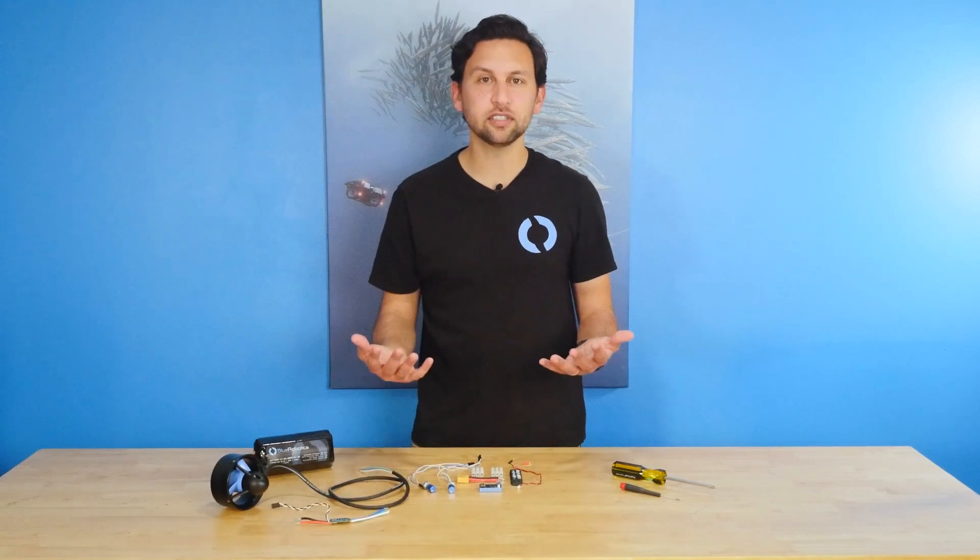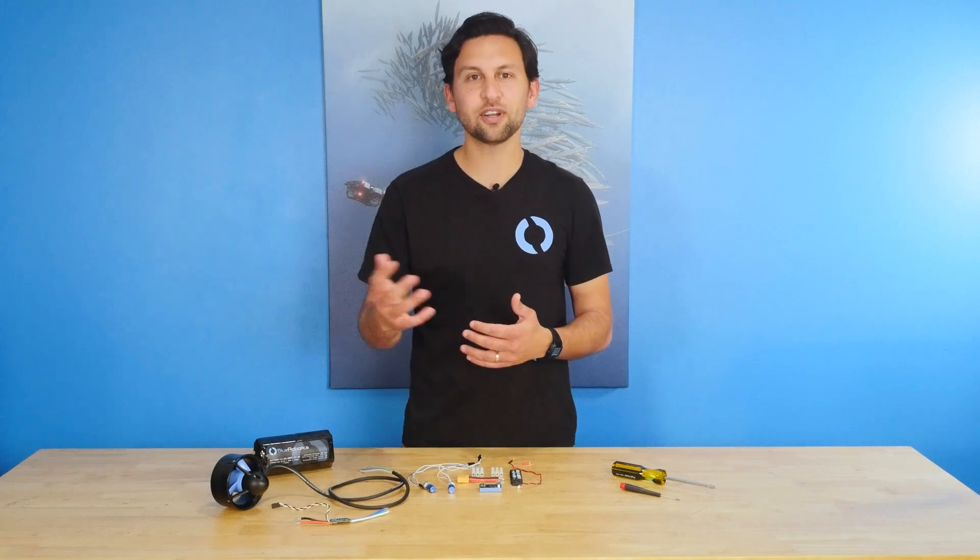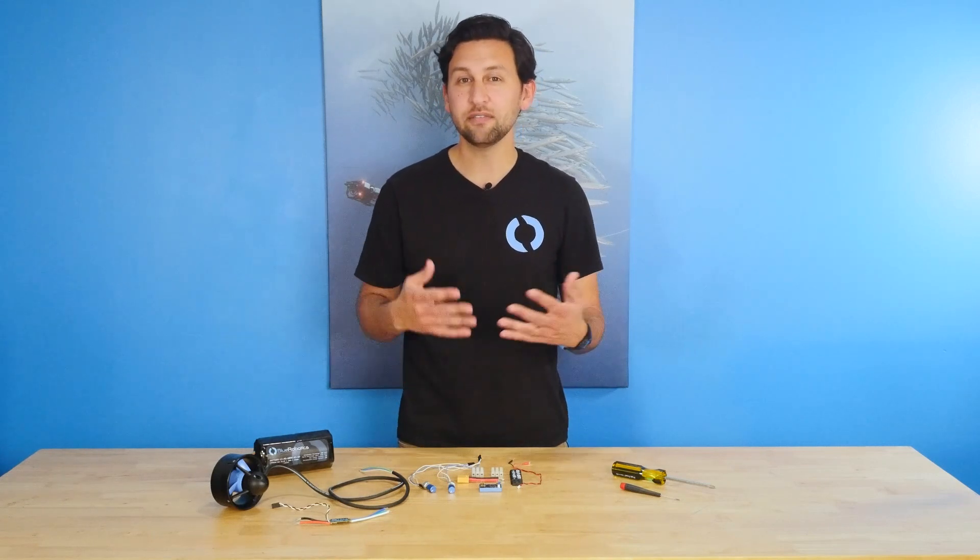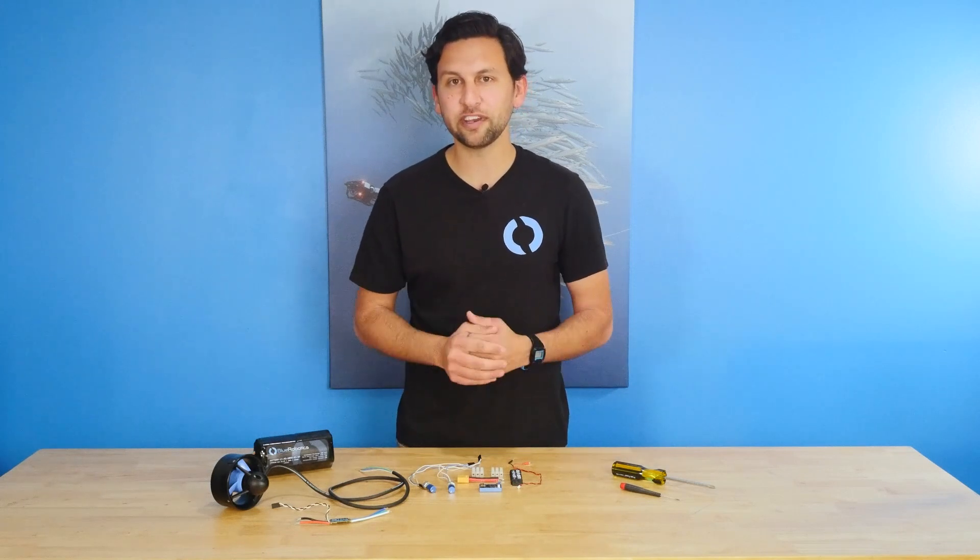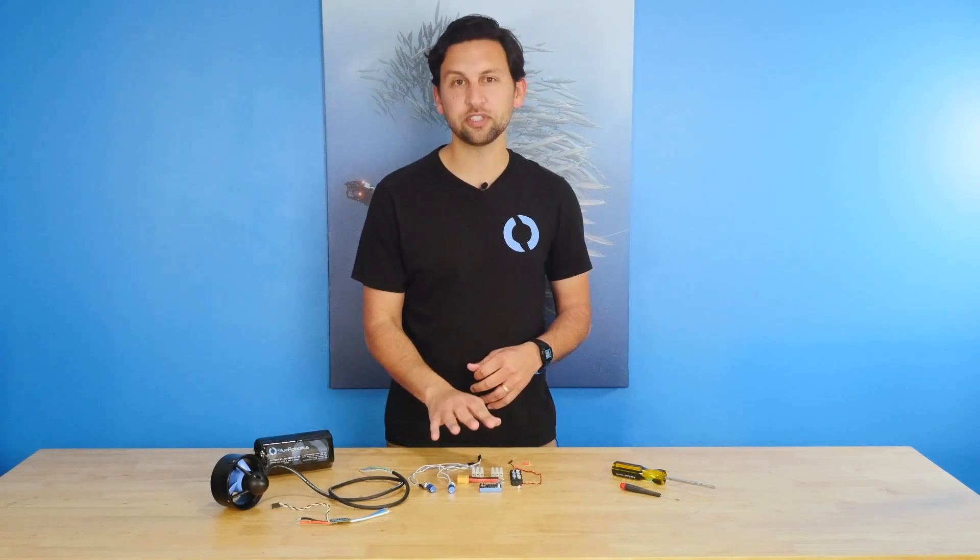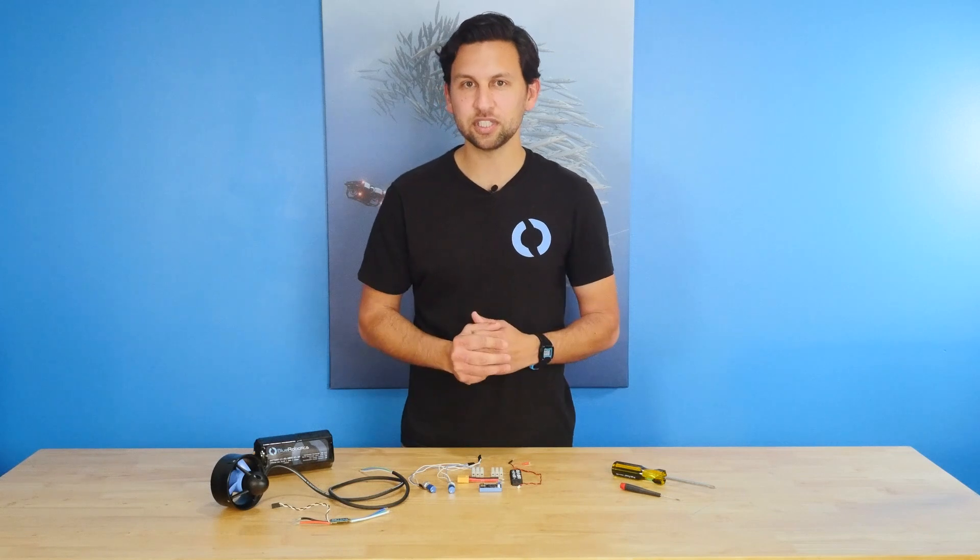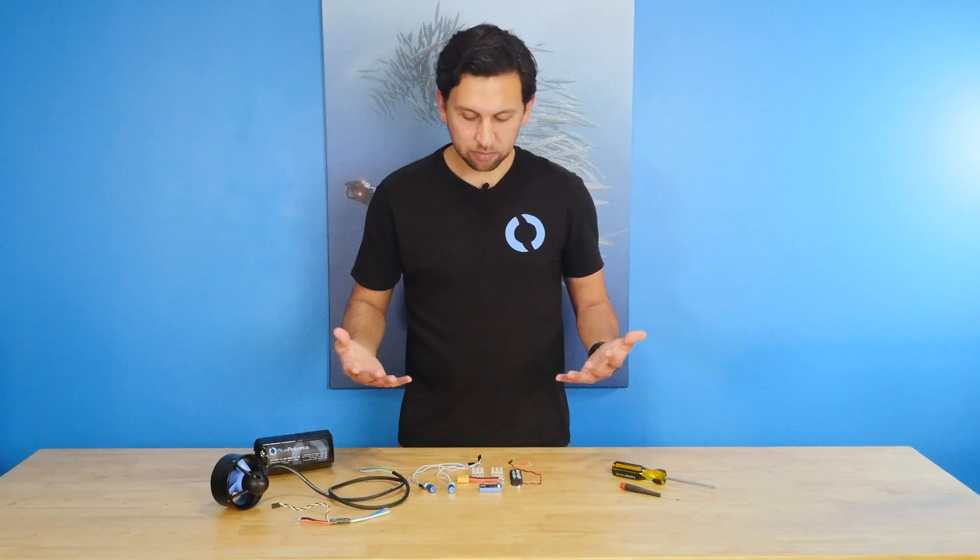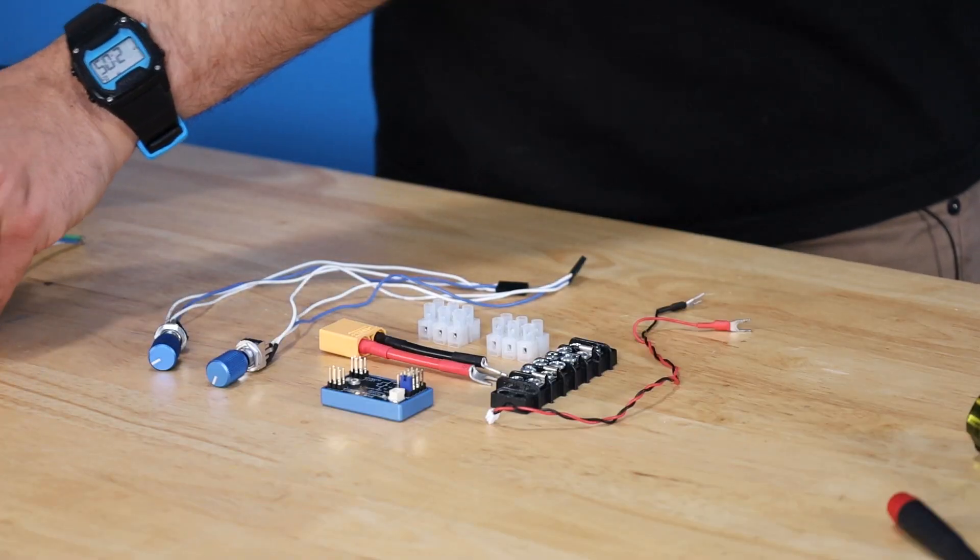So we need a source for that signal. If you've done RC hobbies before, you've probably used an RC radio receiver, which can provide a signal like that. If you're doing robotics, you're probably using an Arduino or other microcontroller to provide that signal. But today we're going to be using the thruster commander. It's a really simple option to just get set up and started and get things spinning right away.